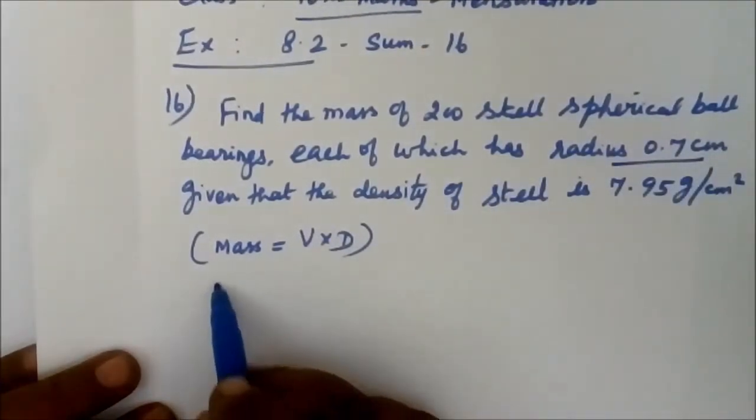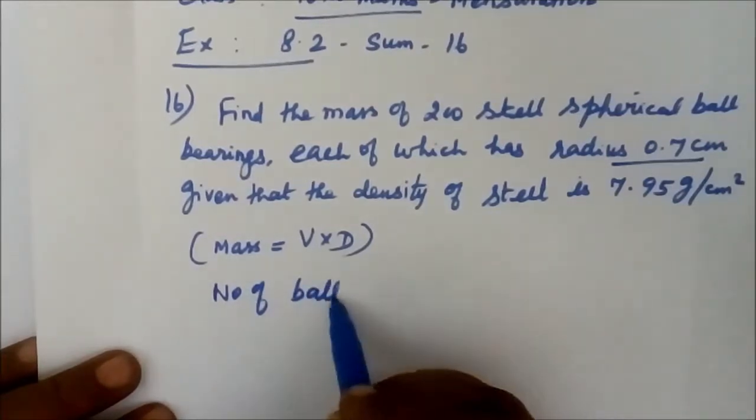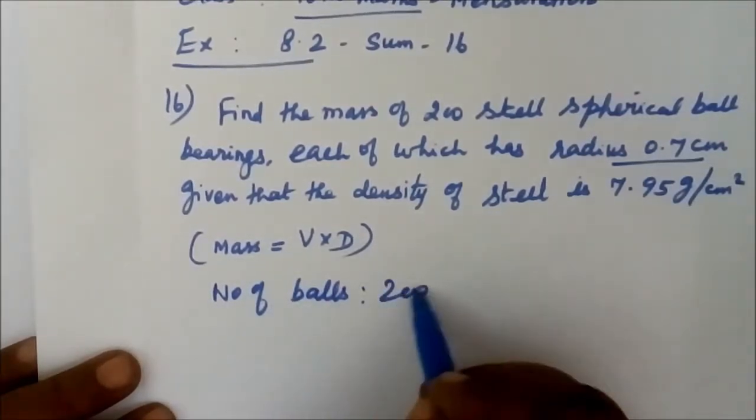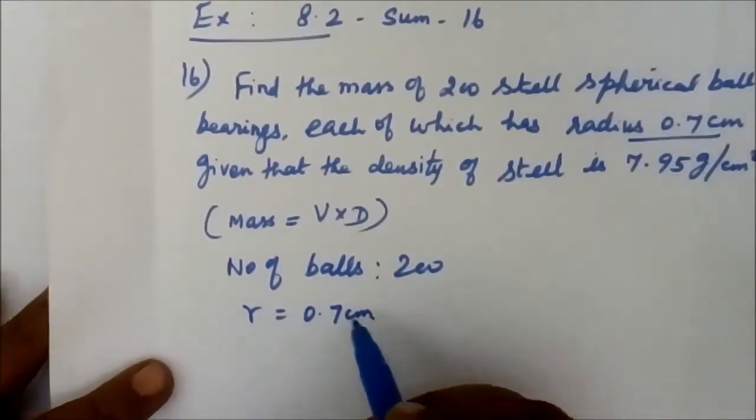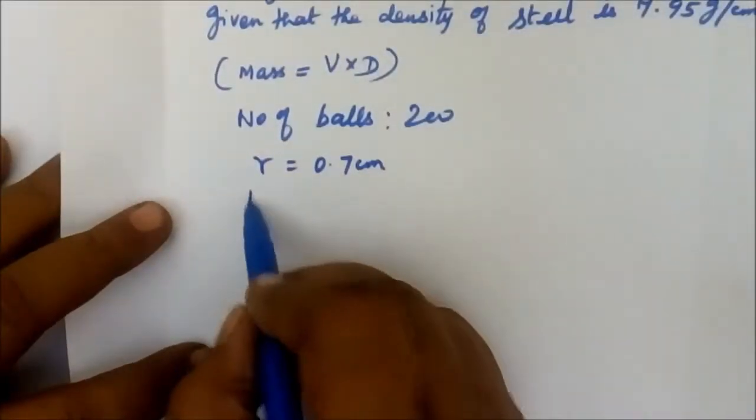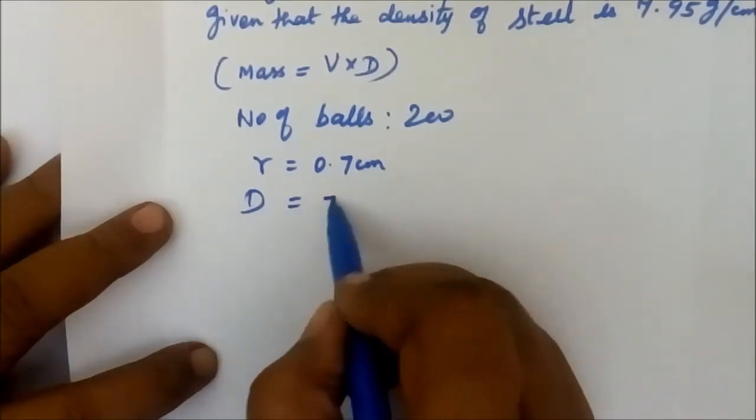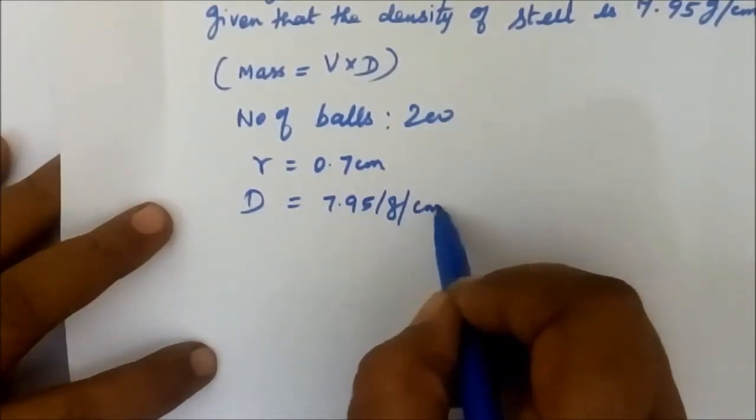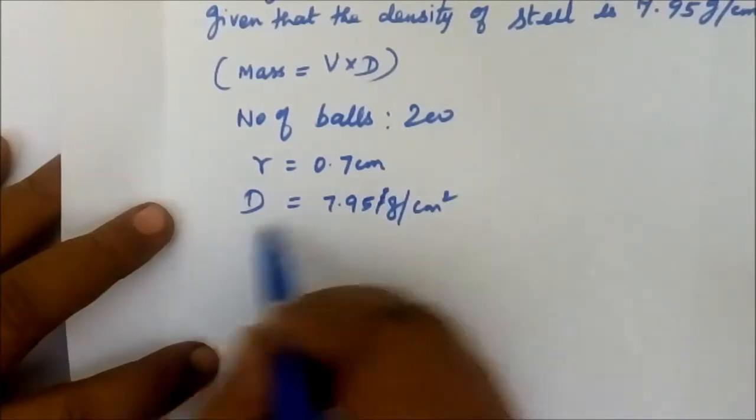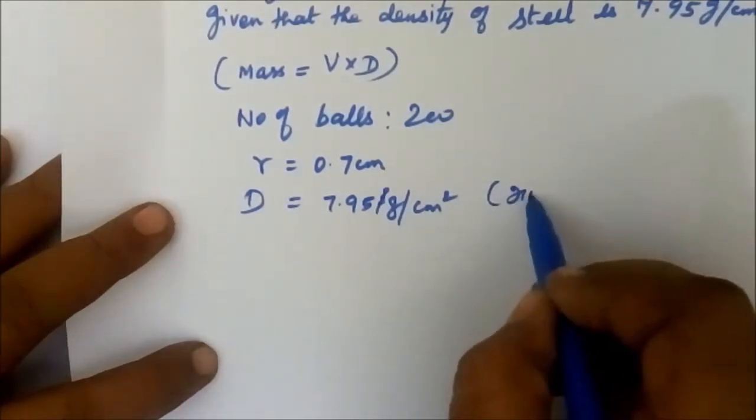Number of balls, number of spherical balls is 200, and radius is 0.7 cm. Density D equals 7.95 g/cm³. Density is equal to this.